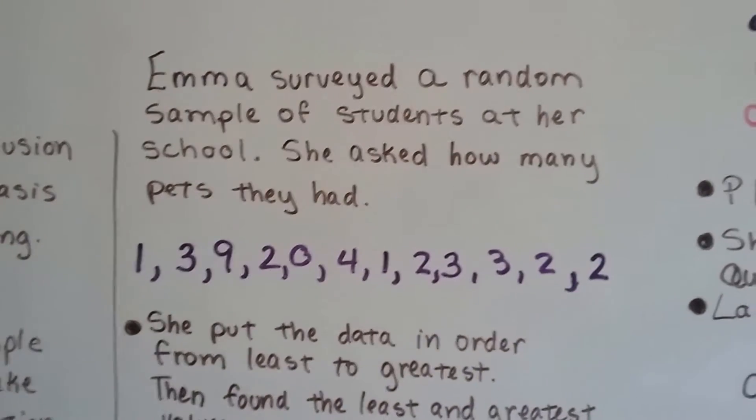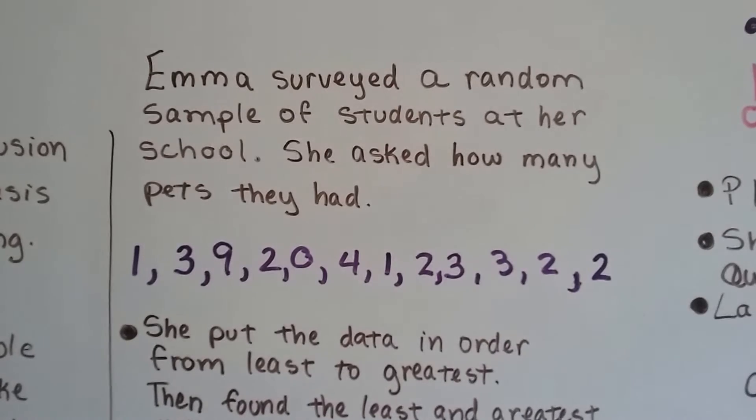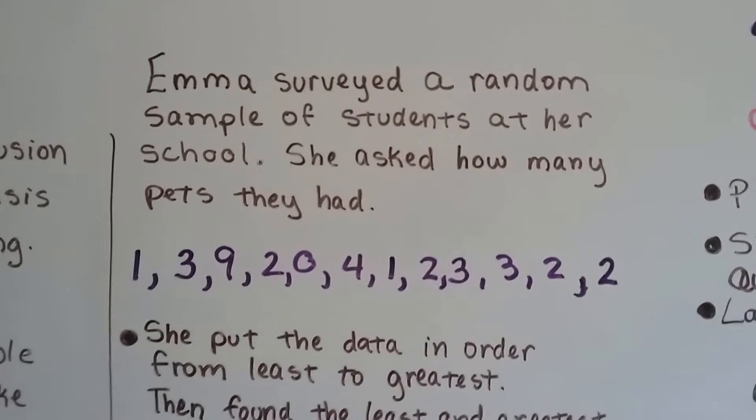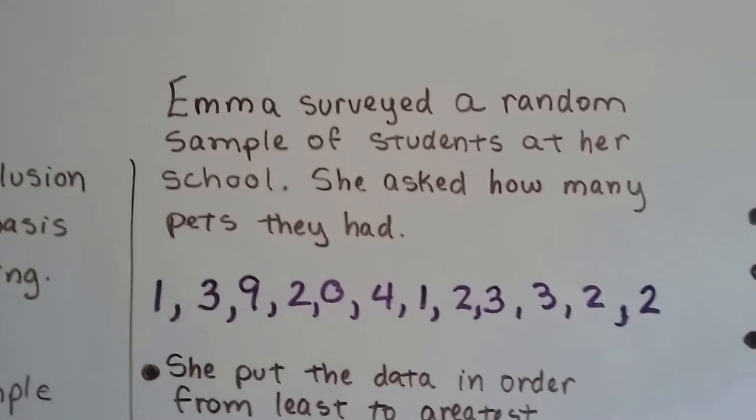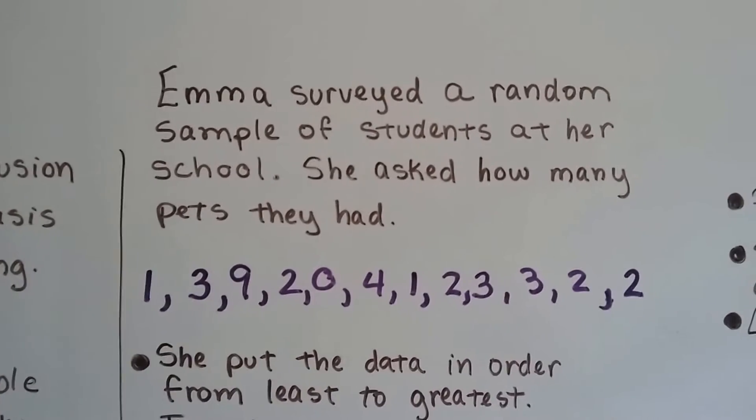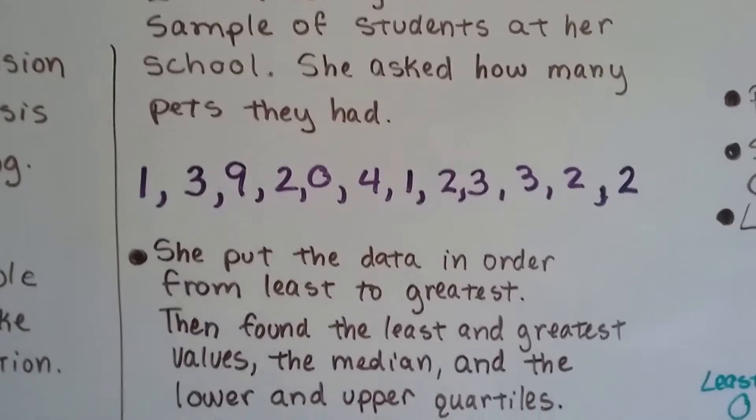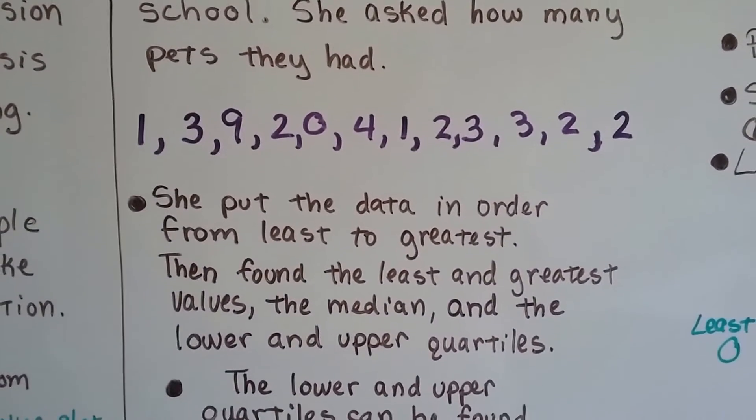Emma surveyed a random sample of students at her school and she asked how many pets they had. And these are the numbers that the kids gave her. Look at that, one kid had 9 pets. Maybe it was a bunch of fish in a fish tank. She put the data in order from least to greatest.